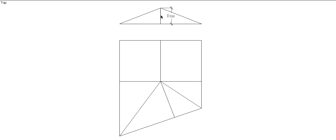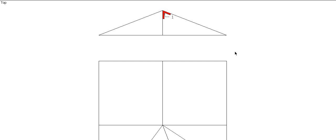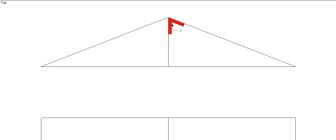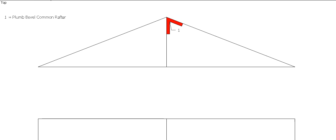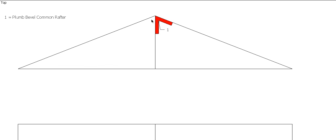First thing you need to do is make sure that you use the correct rise for your roof, or the correct angle. Span is not going to matter as long as we're using the correct rise. So 30 degrees, 25 degrees — whatever your angle is, make sure that that's right. And obviously that is going to create our first bevel, which is our plumb bevel for a common rafter, and our second bevel, which is our level bevel for our common rafter. So they're the first two easy ones.